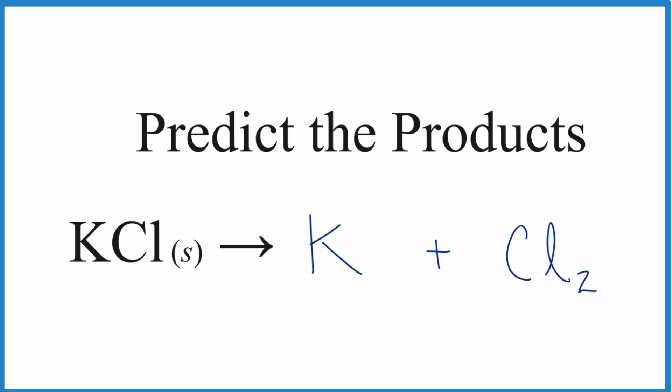We could put our states in. I'm guessing that potassium would be a solid since it's a metal. So put an S after that. And then chlorine, that's going to be a gas, kind of a greenish gas.